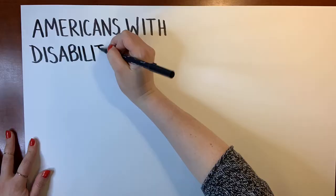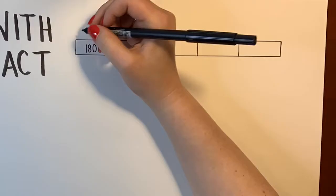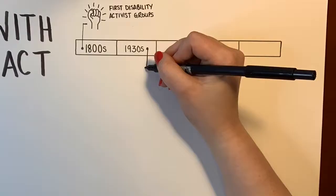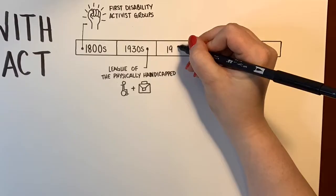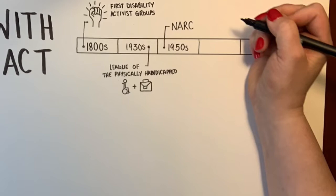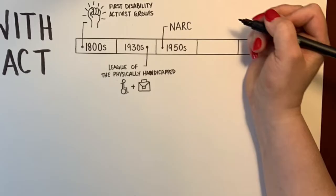Let's talk about the Americans with Disabilities Act. To understand the ADA, let's first start with a little history. There are examples of activist groups campaigning for disability rights dating back to the 1800s. During the Great Depression, the League of the Physically Handicapped fought for employment for people with disabilities. In 1950, the NARC, or National Association for Retarded Children, was founded — which isn't a great name by today's standards, but is an example of how things can change and improve over time.